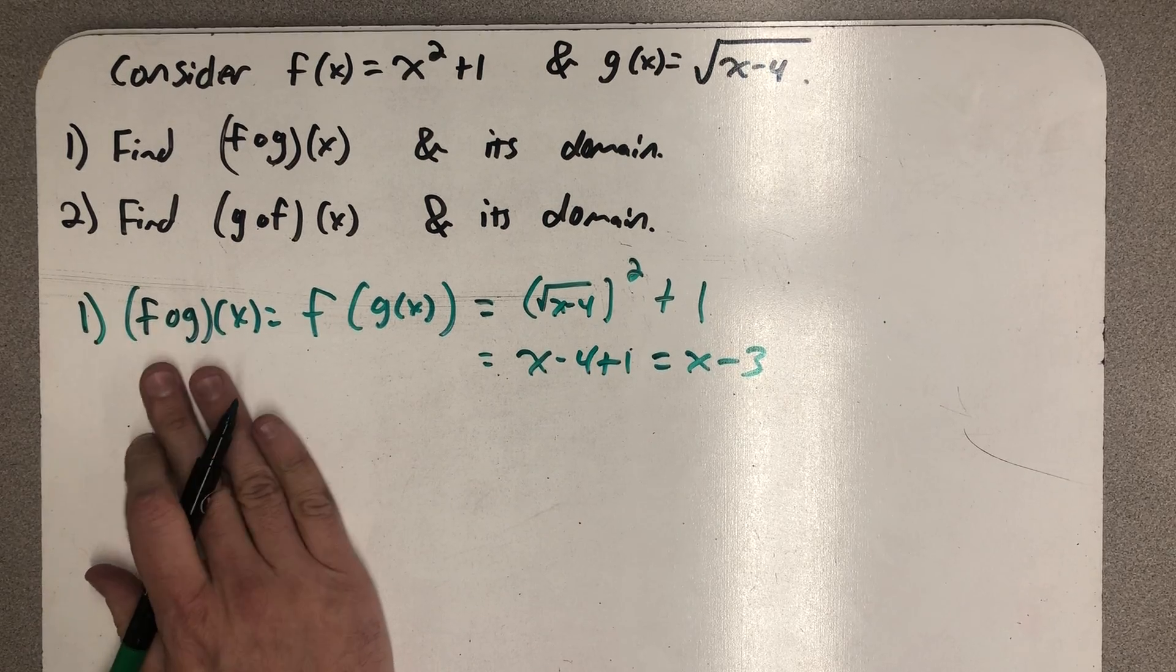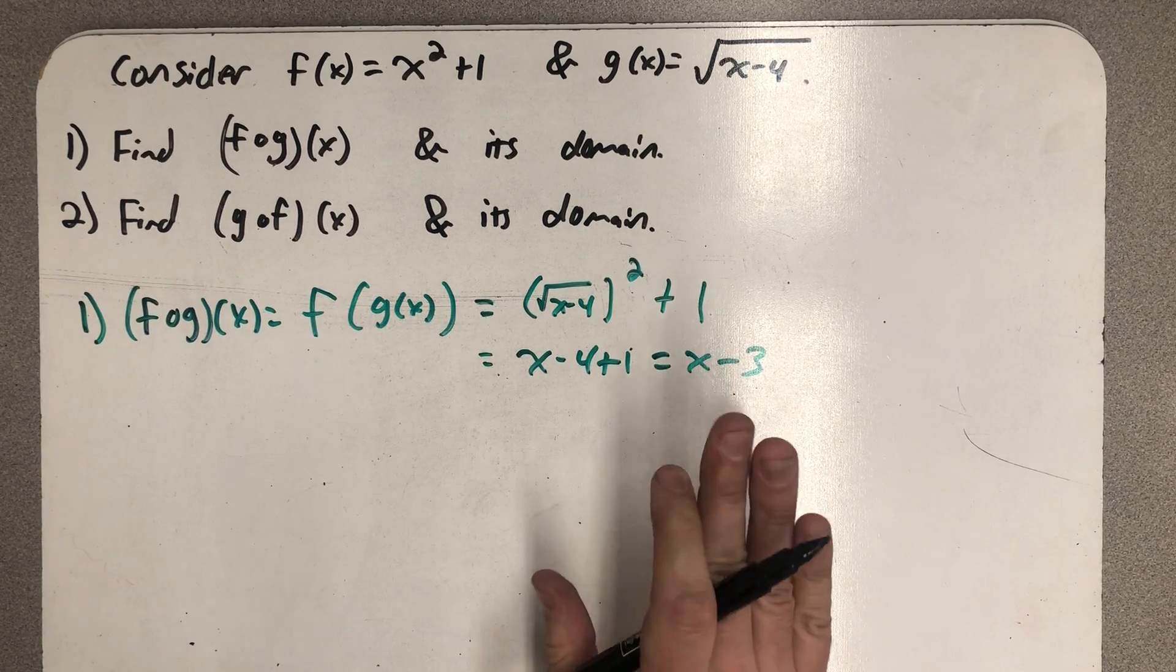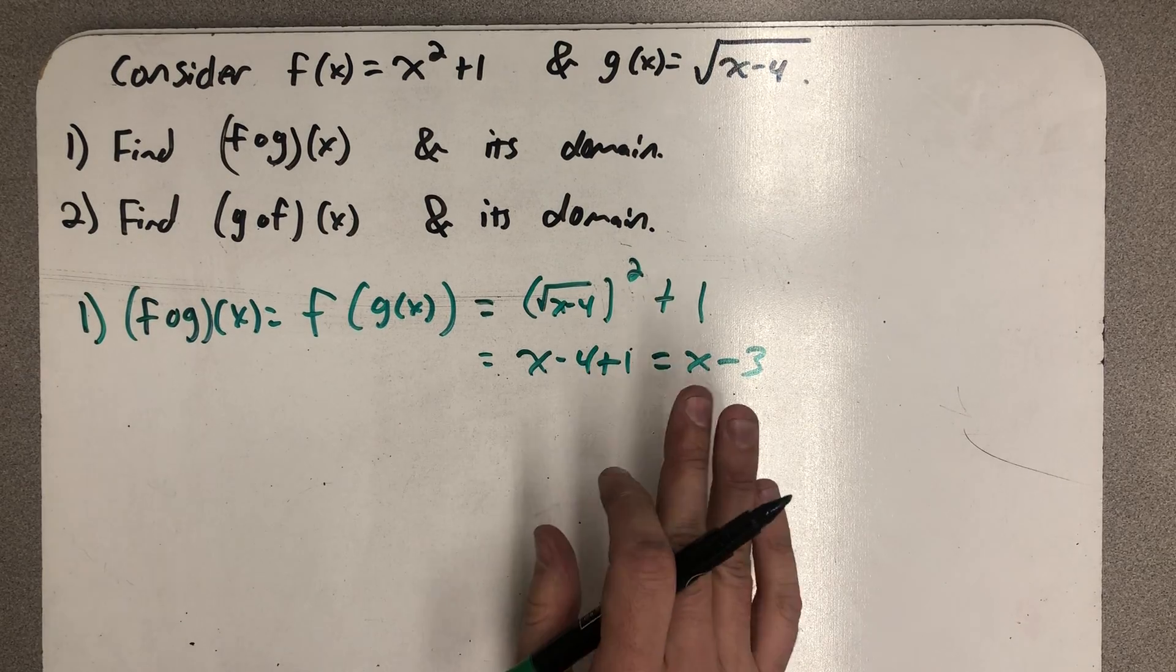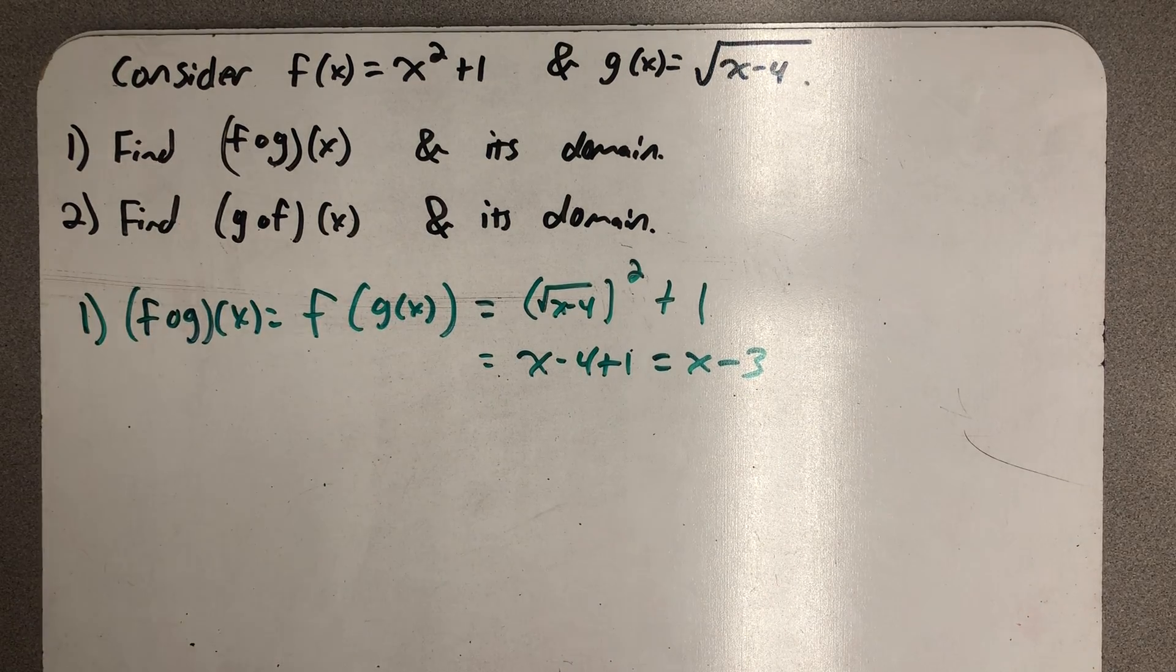f composed with g of x is equal to x minus 3 for all of the x's in an appropriately chosen domain. So let's find that domain.